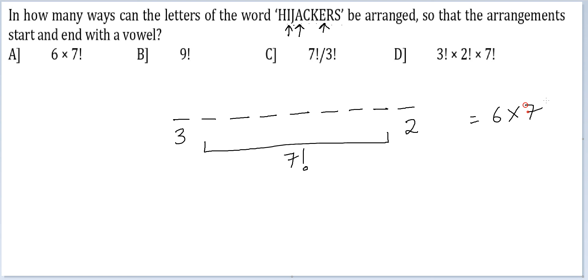Altogether we get 6 times 7 factorial. Option 3 will be your final answer.